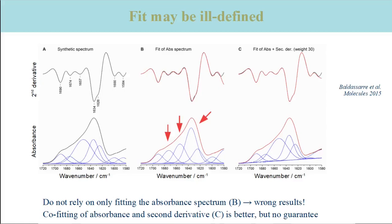Now we come to a problem that may have rather severe consequences. A fit to the absorption spectrum is often not very well defined because the spectrum is rather featureless. This is particularly problematic when many component bands are fitted. This slide shows what can go wrong, and that you should not blindly believe a fit however good the result looks. The bottom spectra are absorbance spectra and the top spectra are second derivative spectra. The starting spectrum on the left is an artificial spectrum where the component bands are exactly known. Panel B in the middle shows a fit to this absorption spectrum, and surprisingly the original set of component bands is not reproduced by the fit, which demonstrates that the best fit is not well defined.